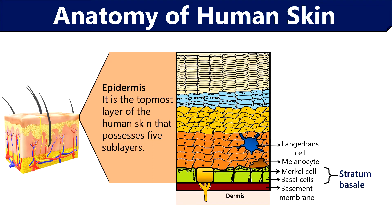Stratum basale is the first layer above the basement membrane and it contains cuboidal basal cells, along with specialized Merkel cells that play an important role in sensation. These basal cells divide and migrate upwards, losing blood supply and becoming flattened — as you can also see in this diagram. Basal cells first divide to form a layer called stratum spinosum.